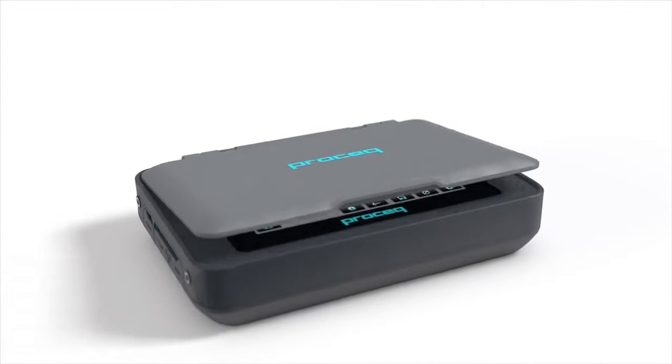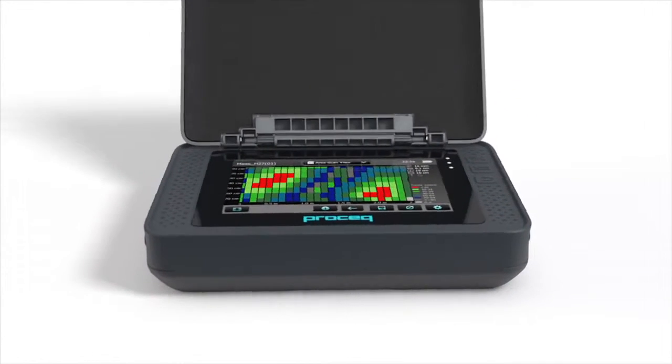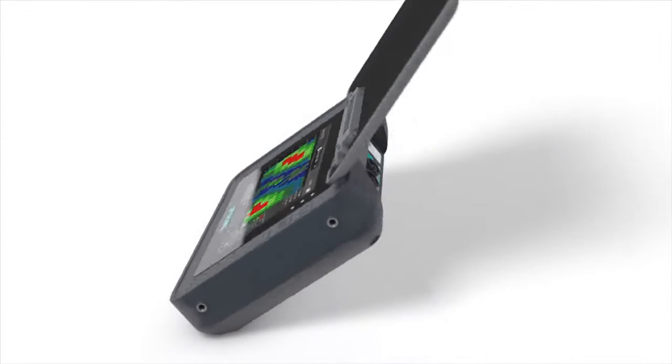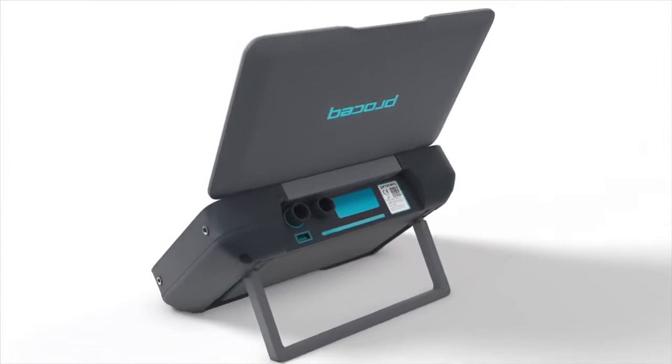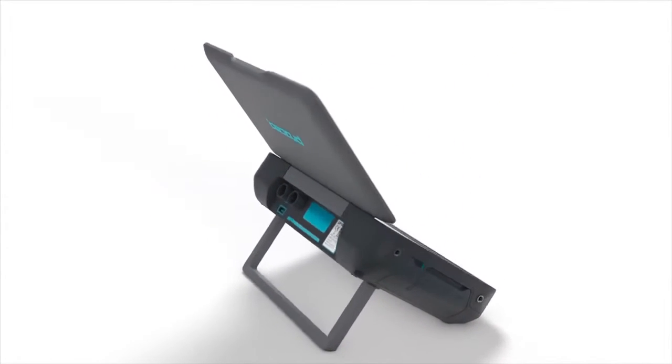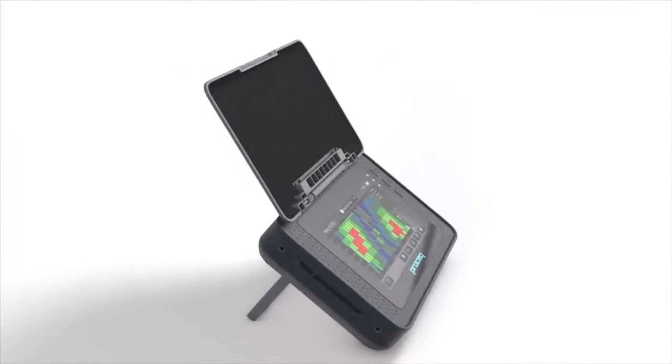As direct successors to the well-known ProFormator 5 Plus S and ScanLog models, the ProFormator PM600 and PM630 models offer increased capabilities for rebar detection, measurement of the concrete cover and rebar diameter.